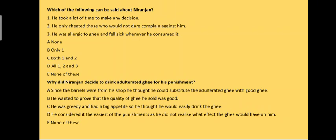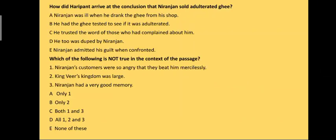Why did Niranjan decide to drink adulterated ghee for his punishment? The answer is option D: he considered it the easiest of the punishments as he didn't realize what effect the ghee would have on him.